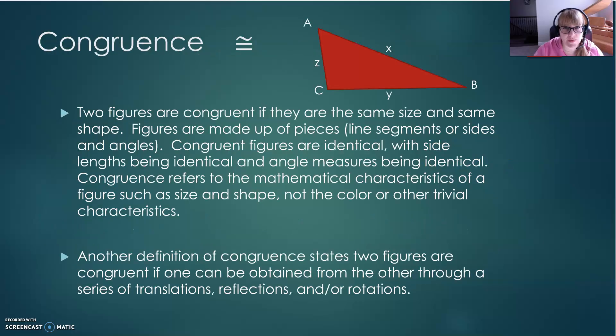Now on to congruence. Congruence uses the symbol like this. It looks a little bit like an equal sign because it kind of means figures, in a geometric sense, are equal. Instead of saying equal, though, we try to use that word congruent. So what does congruent really mean?